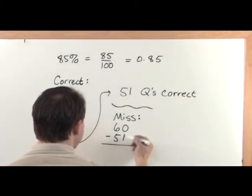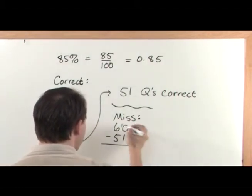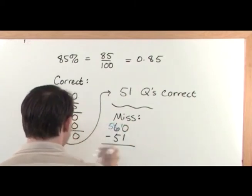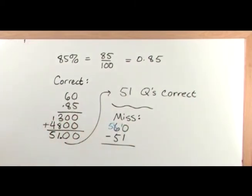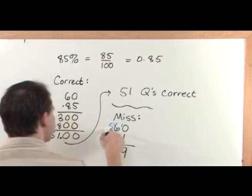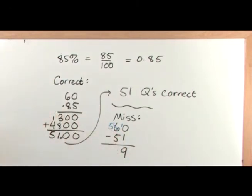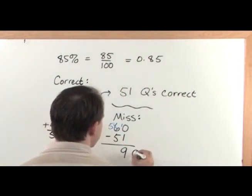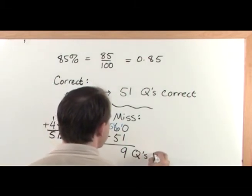Starting in this column, 0 minus 1, I can't really do it, so I borrow. I make it a 10, I make him a 5. So now 10 minus 1, I think you all know is 9. And 5 minus 5 is 0, so I don't even have to put him. So 9 questions missed.